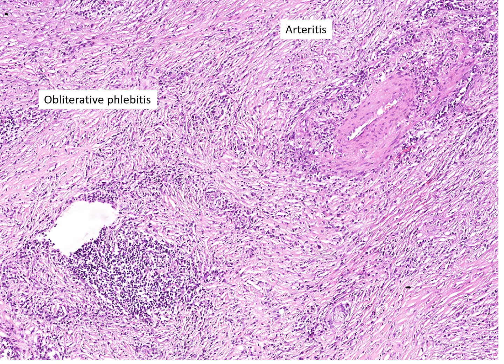Perhaps the most characteristic feature of type 1 autoimmune pancreatitis is obliterative phlebitis, and here's a focus of an obliterated vein. One of the challenges to identifying foci of obliterative phlebitis is identifying these partially or completely obliterated veins. A rule of thumb that has worked very well for me is that most arteries and veins run together. Therefore, if you see a circumscribed aggregate of inflammatory cells like seen here, that's very suspicious for an obliterated vein. An elastic stain can be very helpful.